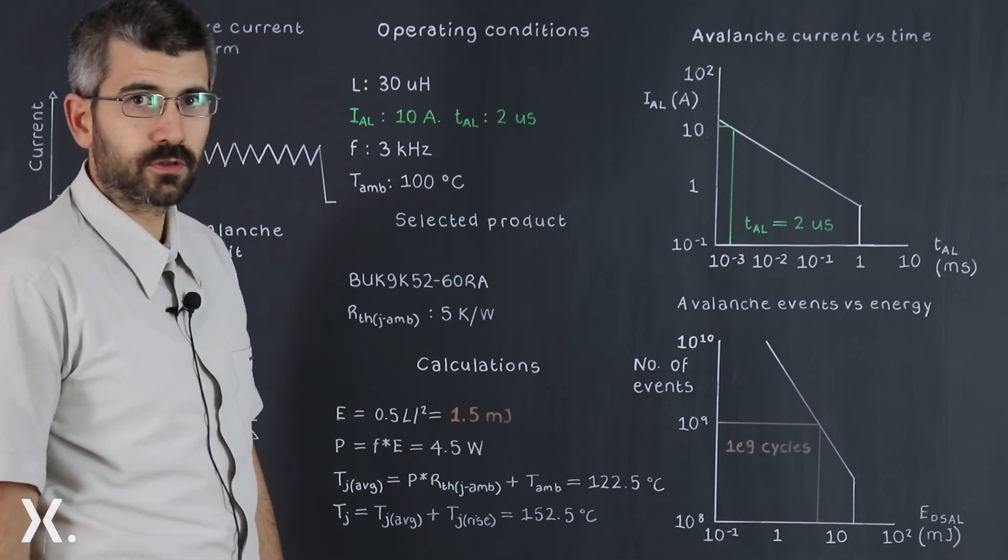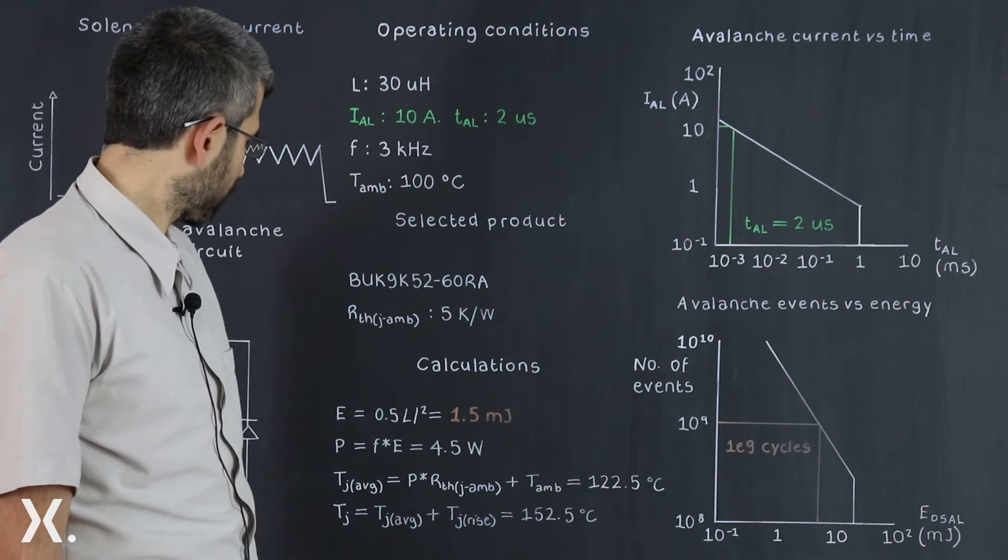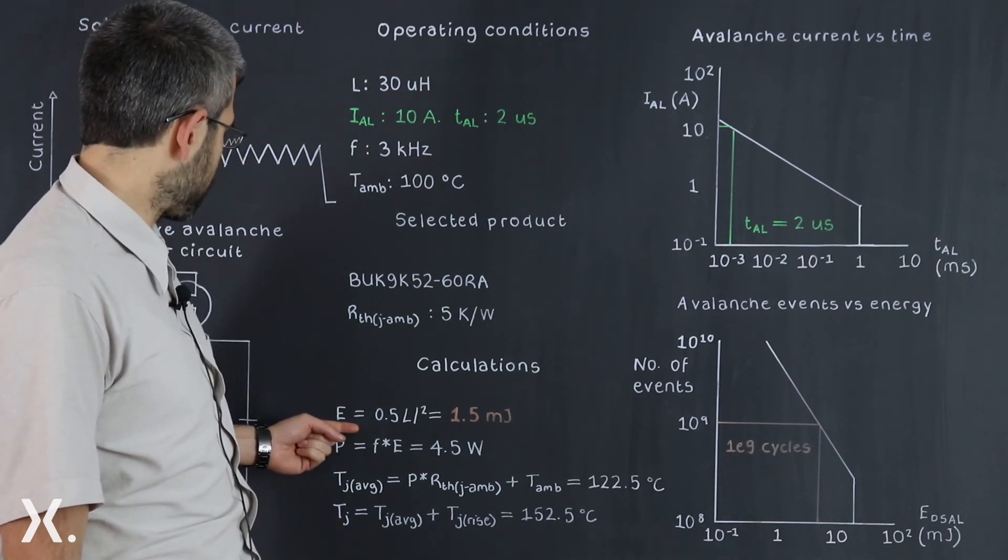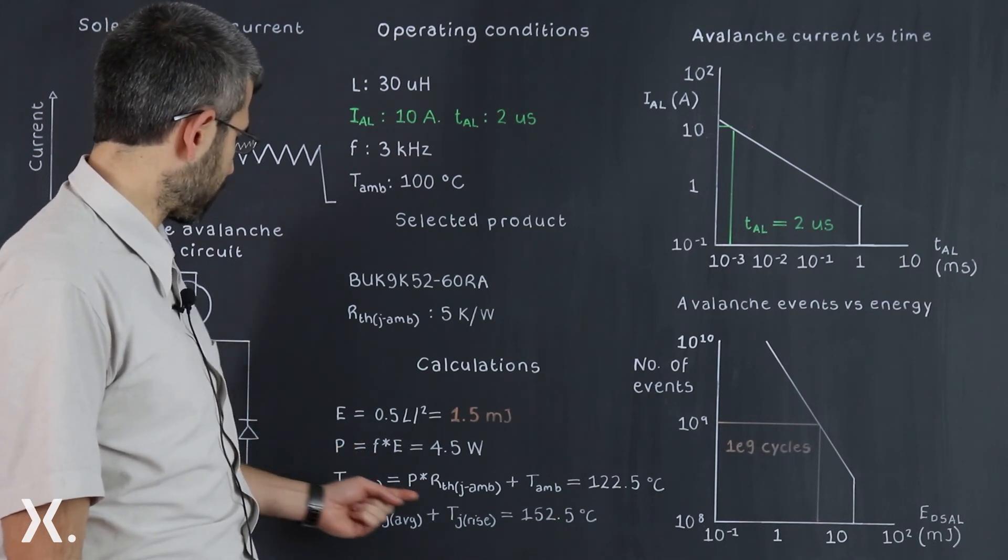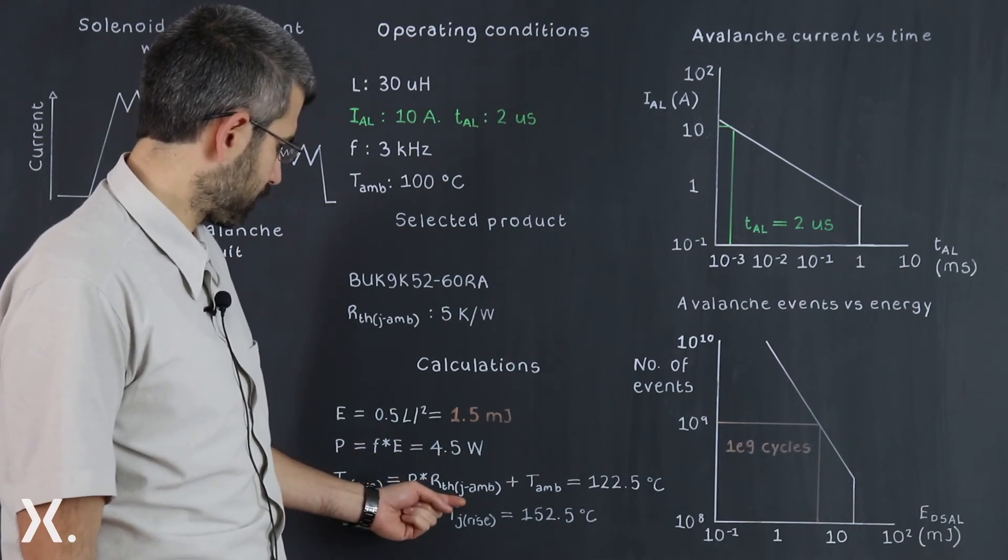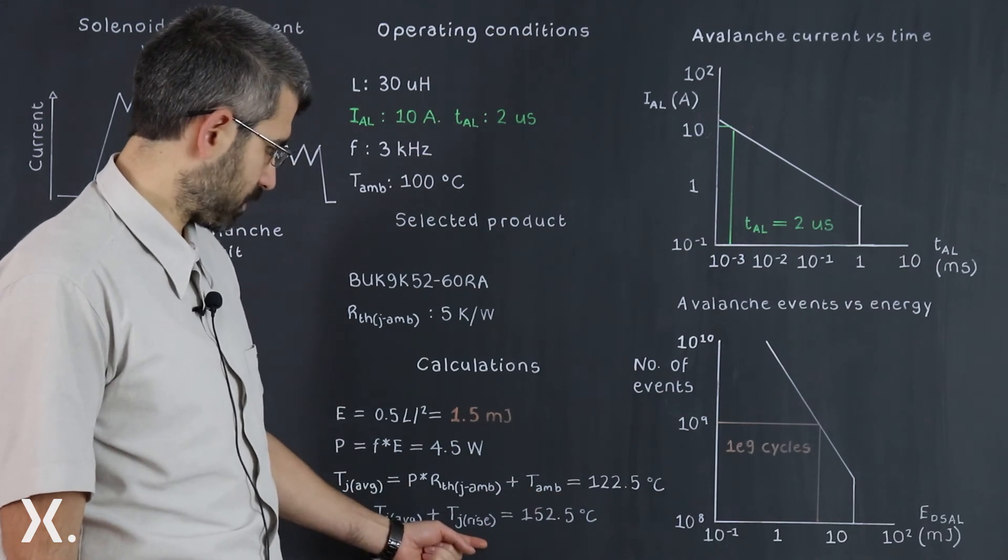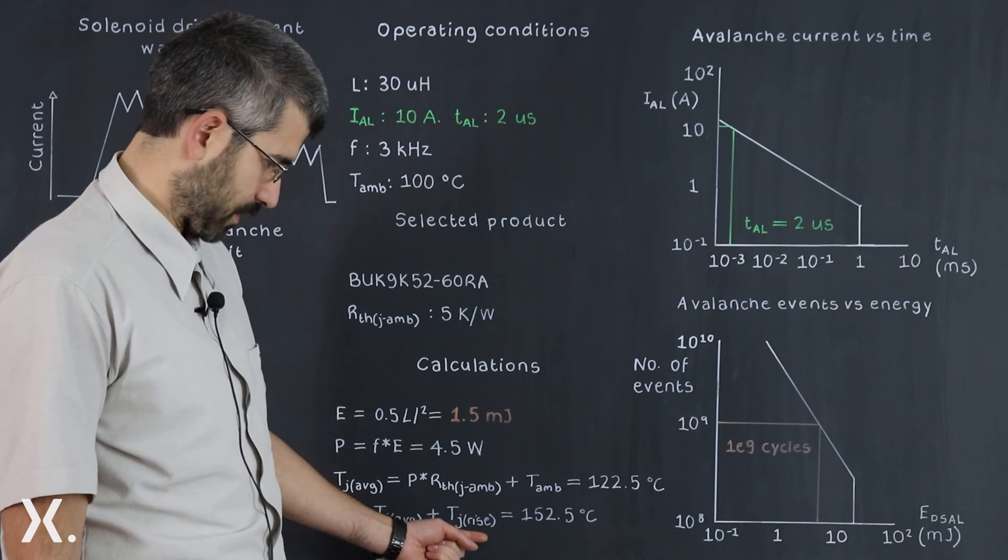Really what we'll have to do is to ensure that the junction temperature is within range. To calculate the junction temperature, we use the energy multiplied by the frequency to get the power, and then we use the power to calculate an average temperature rise to which we add the ambient temperature and an instantaneous temperature rise. Instantaneous temperature rise is capped at 30 degrees. And we see that the MOSFET temperature is still below the 175 celsius limit.